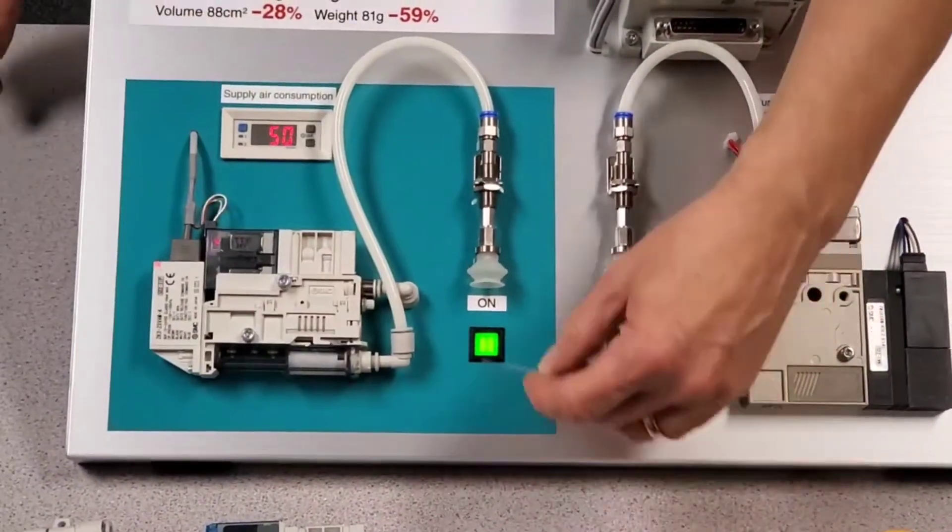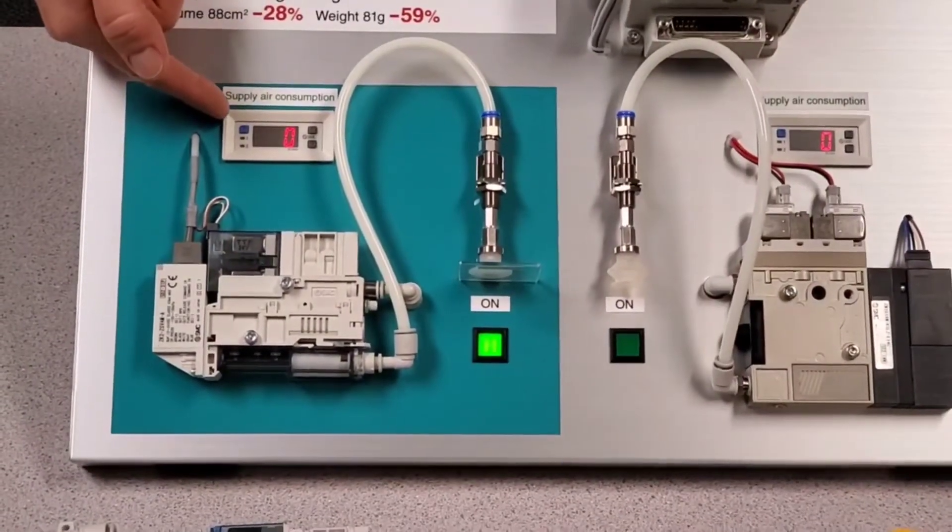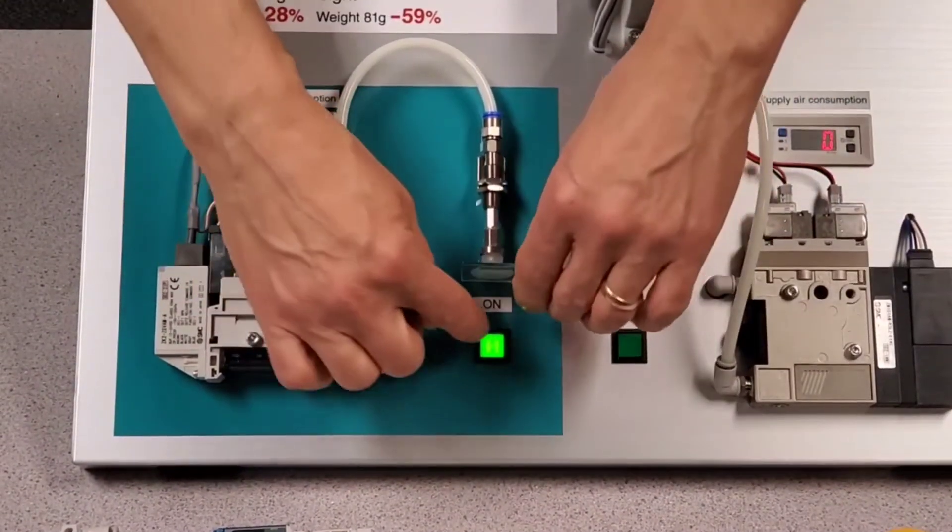On the ZK2, when I put the workpiece on, the flow goes to zero.